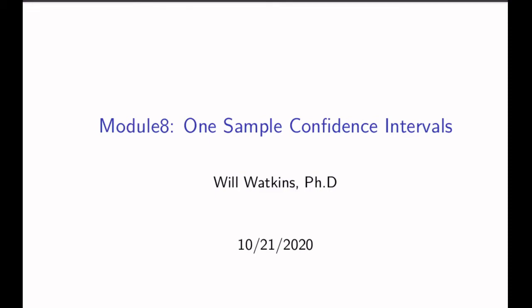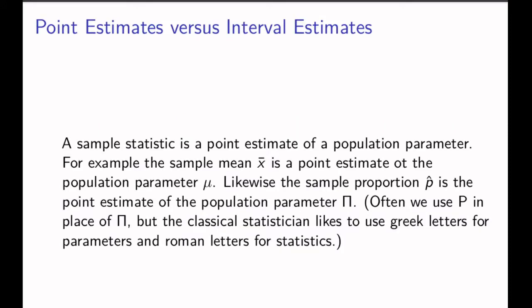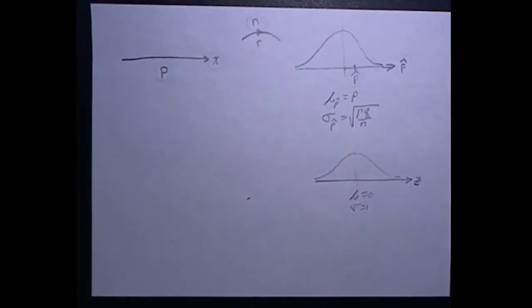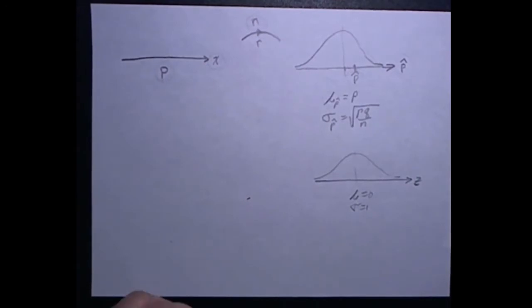This video is a quick review of some of the zoom sessions we've had over module 8. We're looking at one-sample confidence intervals. In both chapter 7 and chapter 8, we're looking at two different kinds of population parameters: the population mean, in the case that the random variable is a numerical variable, and the population proportion, for a categorical variable. We use three distribution diagrams in chapter 7 for hypothesis testing and will also use three in chapter 8 to write confidence intervals.